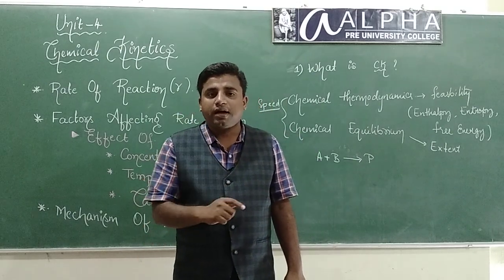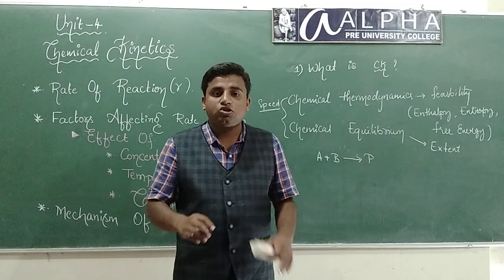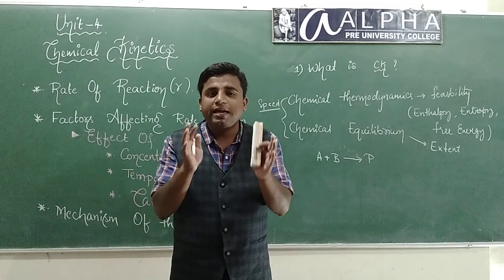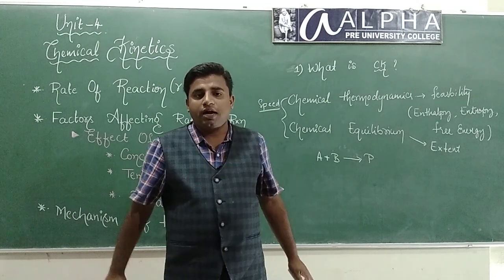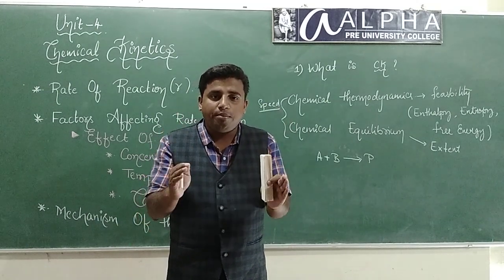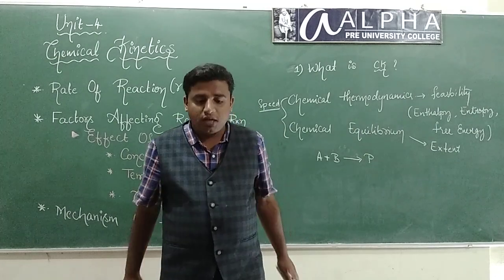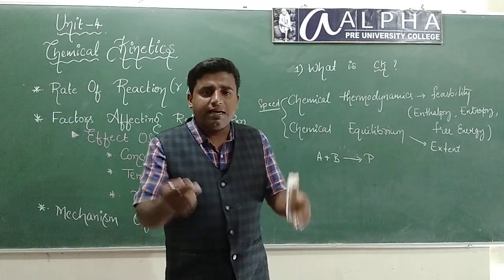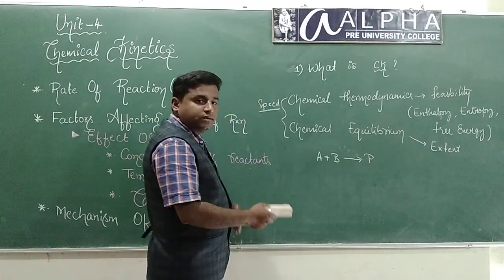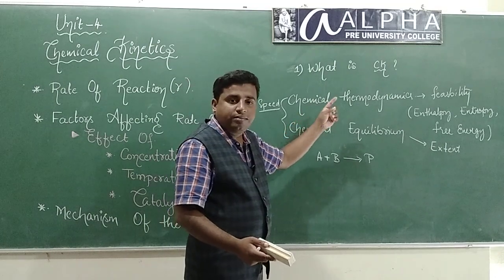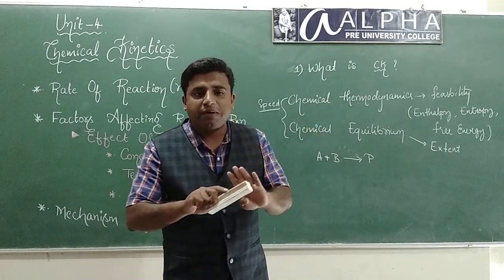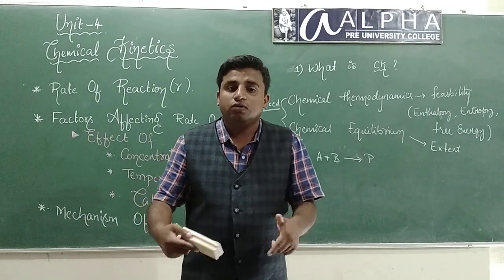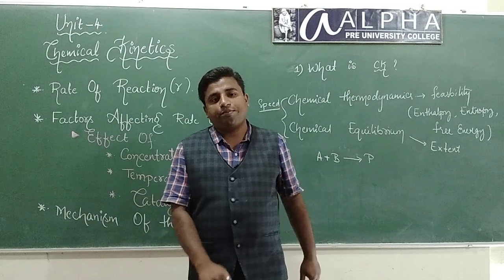Here we are. So what is chemical kinetics all about? Chemical kinetics is all about knowing the speed of the reaction. Not just the speed of the reaction — we have so many things; let us understand one by one. Chemical thermodynamics and chemical equilibrium will not explain the speed of the reaction. That is why we want to know the speed of the reaction, and we will explain it in this chapter.